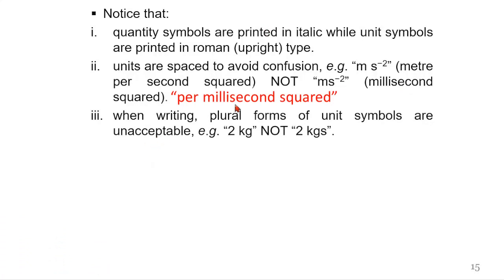When writing, plural forms of unit symbols are unacceptable. For instance, 2 kg is written as it is: 2, with a space in between, and then kg. Not 2 kgs. That's unacceptable.